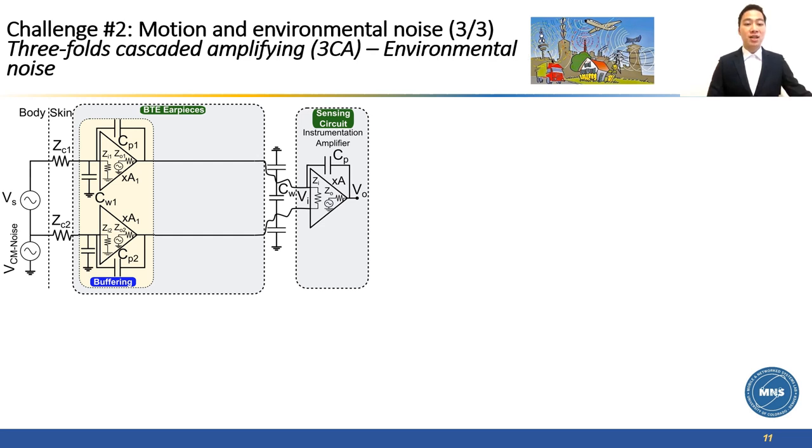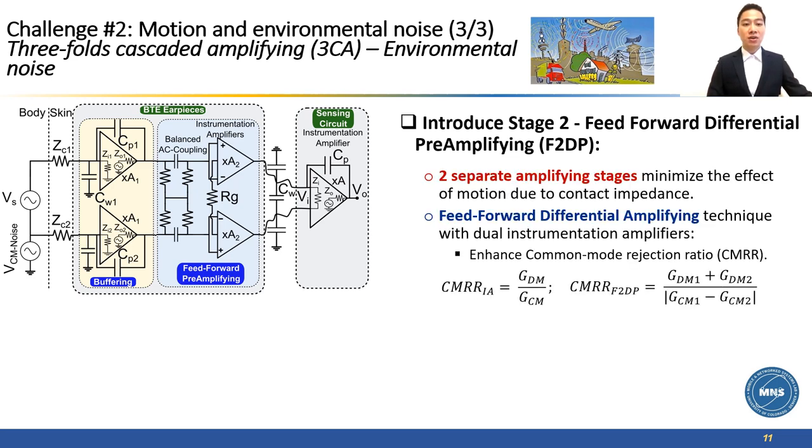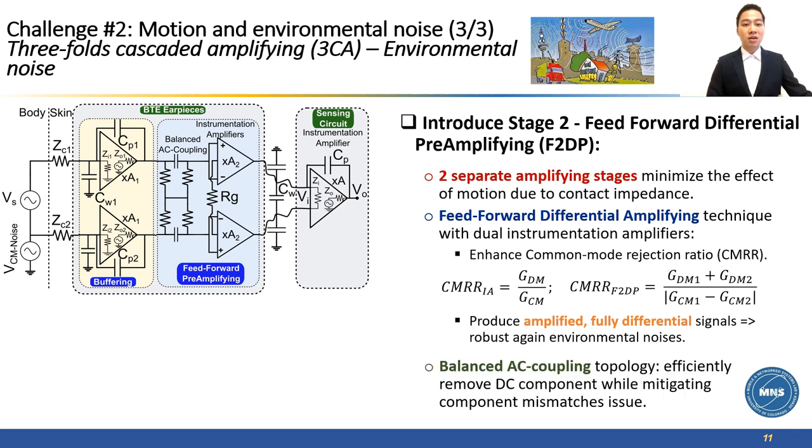To address the noise coupling from the environment, we will need to add another stage called feed-forward differential preamplifying, or F2DP, to amplify our behind-the-ear signal before driving the signal wire. F2DP technique is employed in our design, so we can enhance the common mode rejection ratio, which is the ability to reject noise coupled into the human body. Furthermore, it also produces amplified and fully differential output signal with robustness against environmental noise coupled into the signal wire. For F2DP to work, we need to remove the DC component inside the input signal. The conventional high-pass filter suffers from component mismatch, which compromises the common mode rejection ratio, so we use a balanced AC coupling topology to effectively remove DC component without suffering from component mismatch.